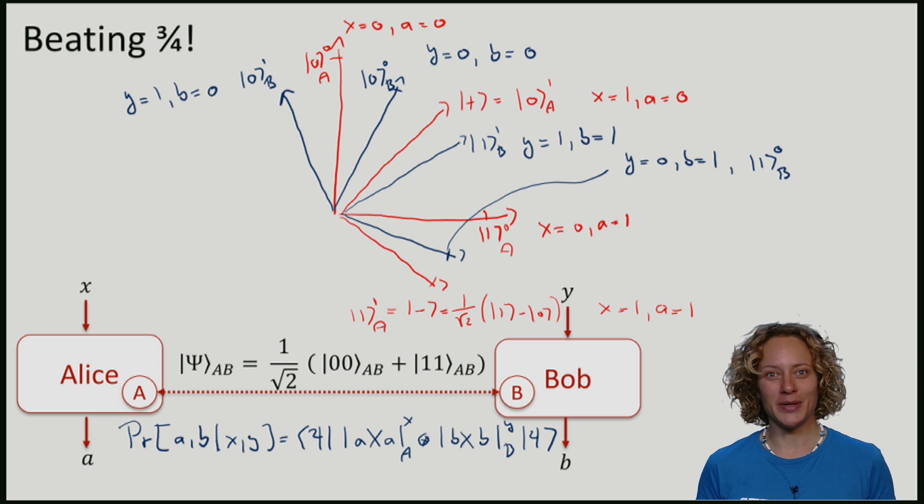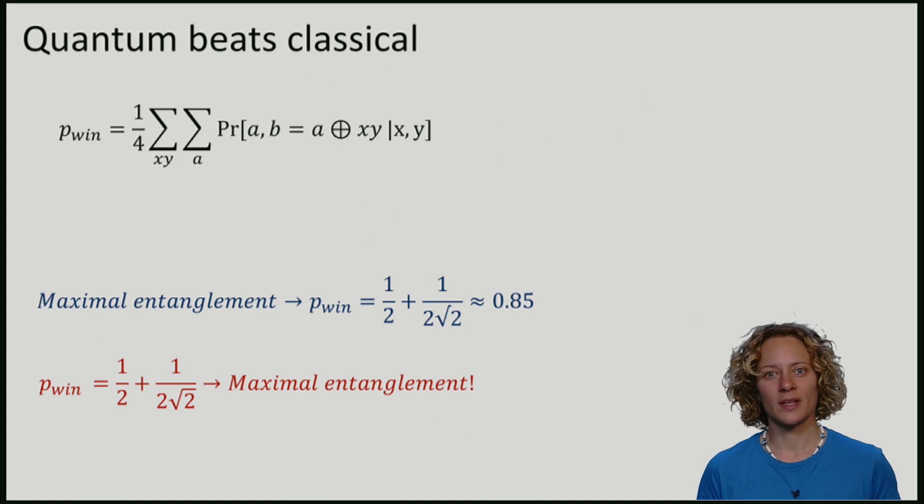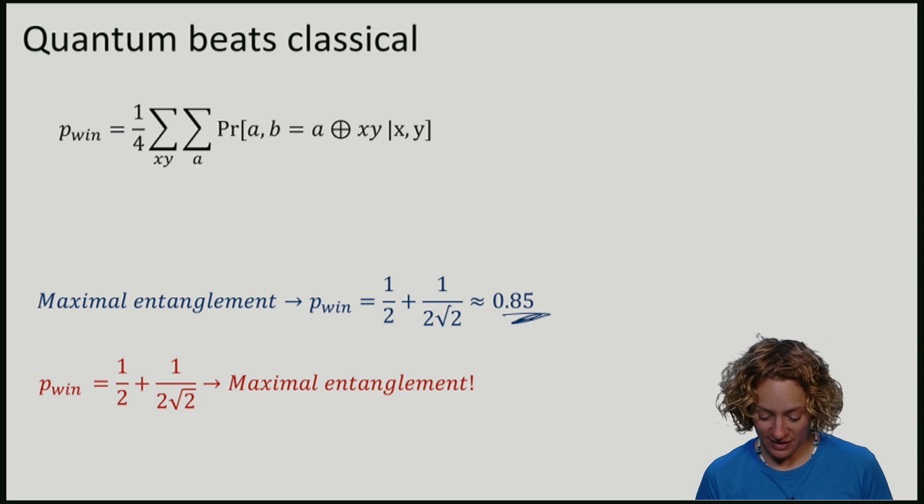If you compute the winning probability, you will find that this winning probability is larger than 3 quarters. In fact, it will be roughly 0.85. In the lecture notes, we see that there exists a strategy for Alice and Bob using a maximally entangled state that gives them a winning probability of 85 percent. This is larger than 3 quarters.